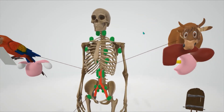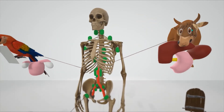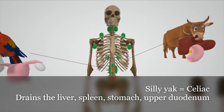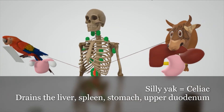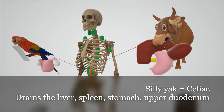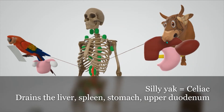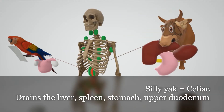Then we come to this guy over here — this is the celiac, representing the celiac lymph nodes. The celiac lymph nodes drain most of the abdominal organs: the liver, spleen, stomach, and pancreas. They've also got the upper duodenum over here. So the celiac lymph nodes drain the liver, the stomach, the spleen, the pancreas, and the upper duodenum.